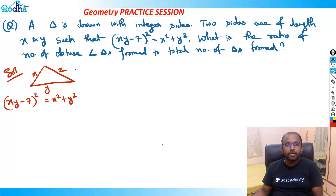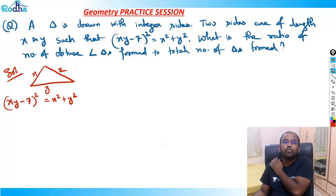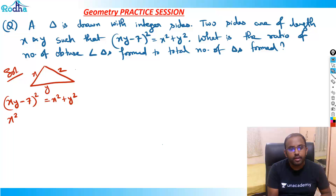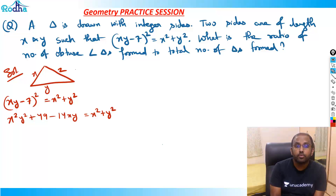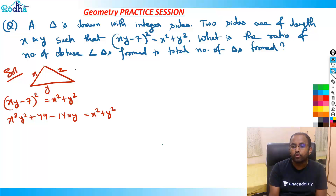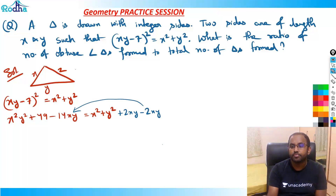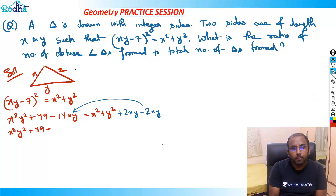Now I want to convert this into a perfect square form. I'll add 2XY and subtract 2XY on the left side. After adding 2XY and 49, it becomes (X + Y)² and this minus 2XY will remain. So I get: X²Y² + 49 - 12XY = (X + Y)².